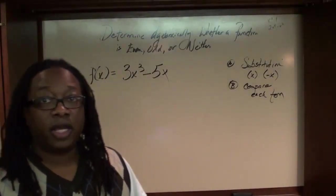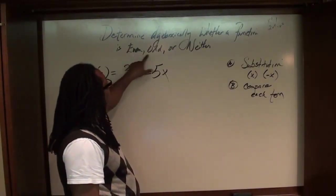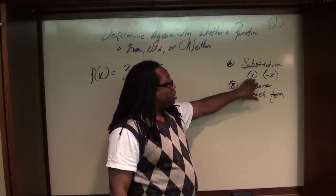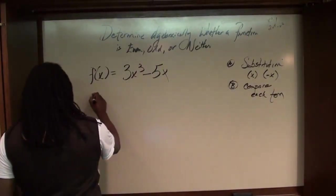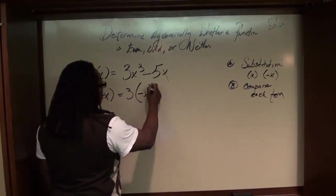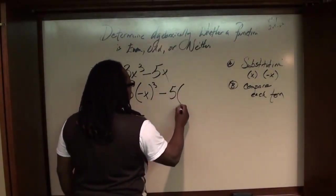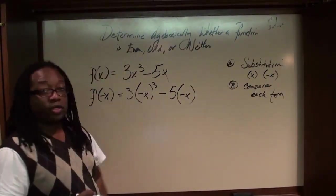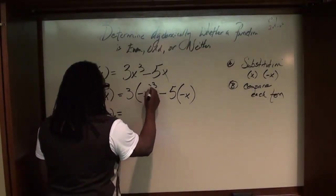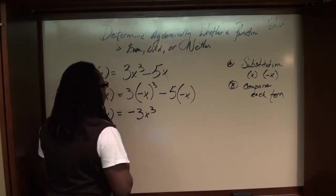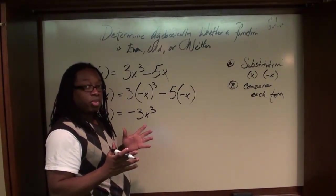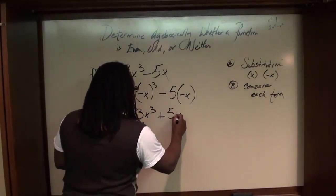Again, we're determining algebraically whether a function is even, odd, or neither. We make a substitution — we substitute negative x everywhere we see an x. So f(-x) is equal to 3 times negative x cubed minus 5 times negative x. After the arithmetic, f(-x) equals 3 times negative x cubed, which gives negative 3x cubed, and then negative 5 times negative x is a positive, so that gives plus 5x.